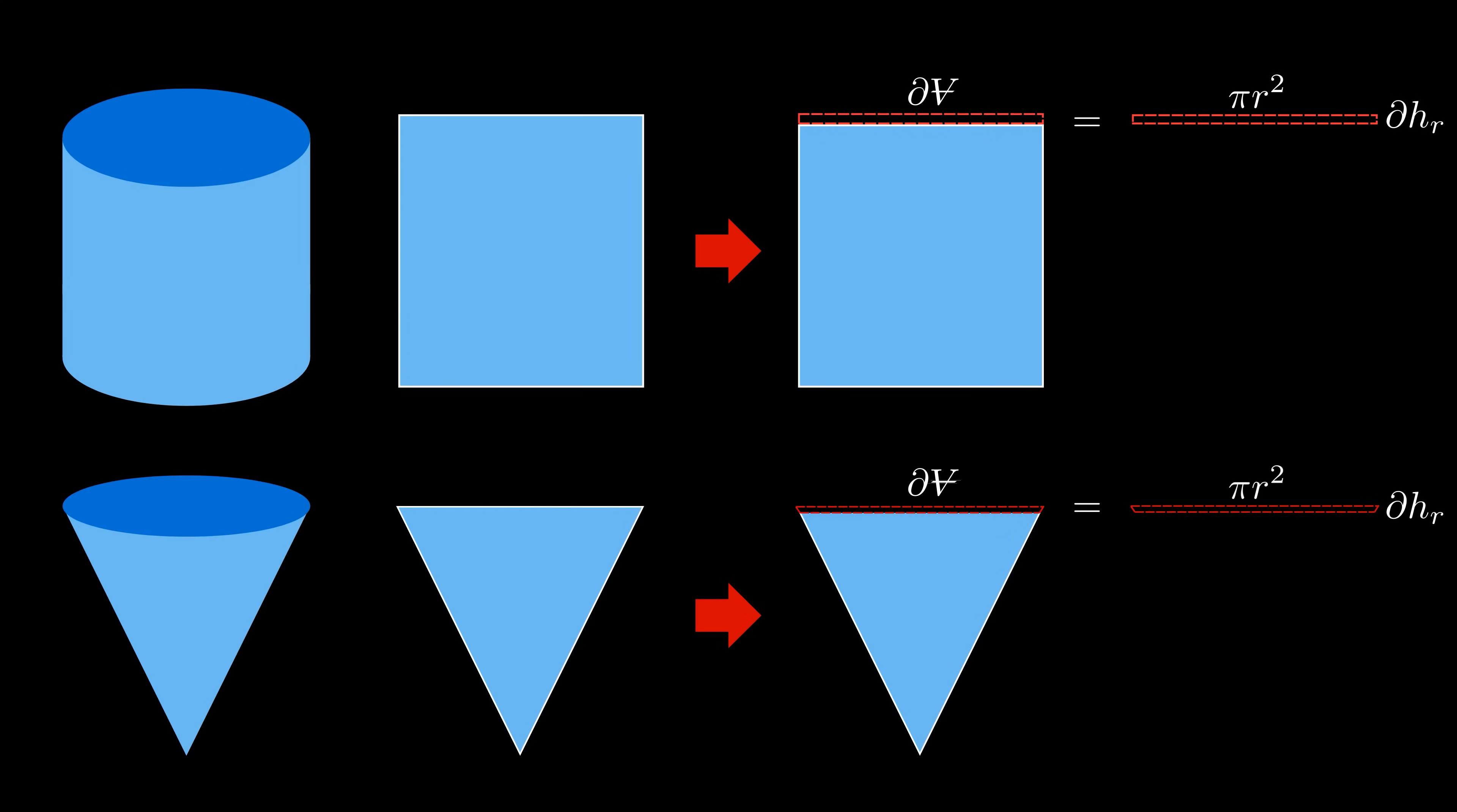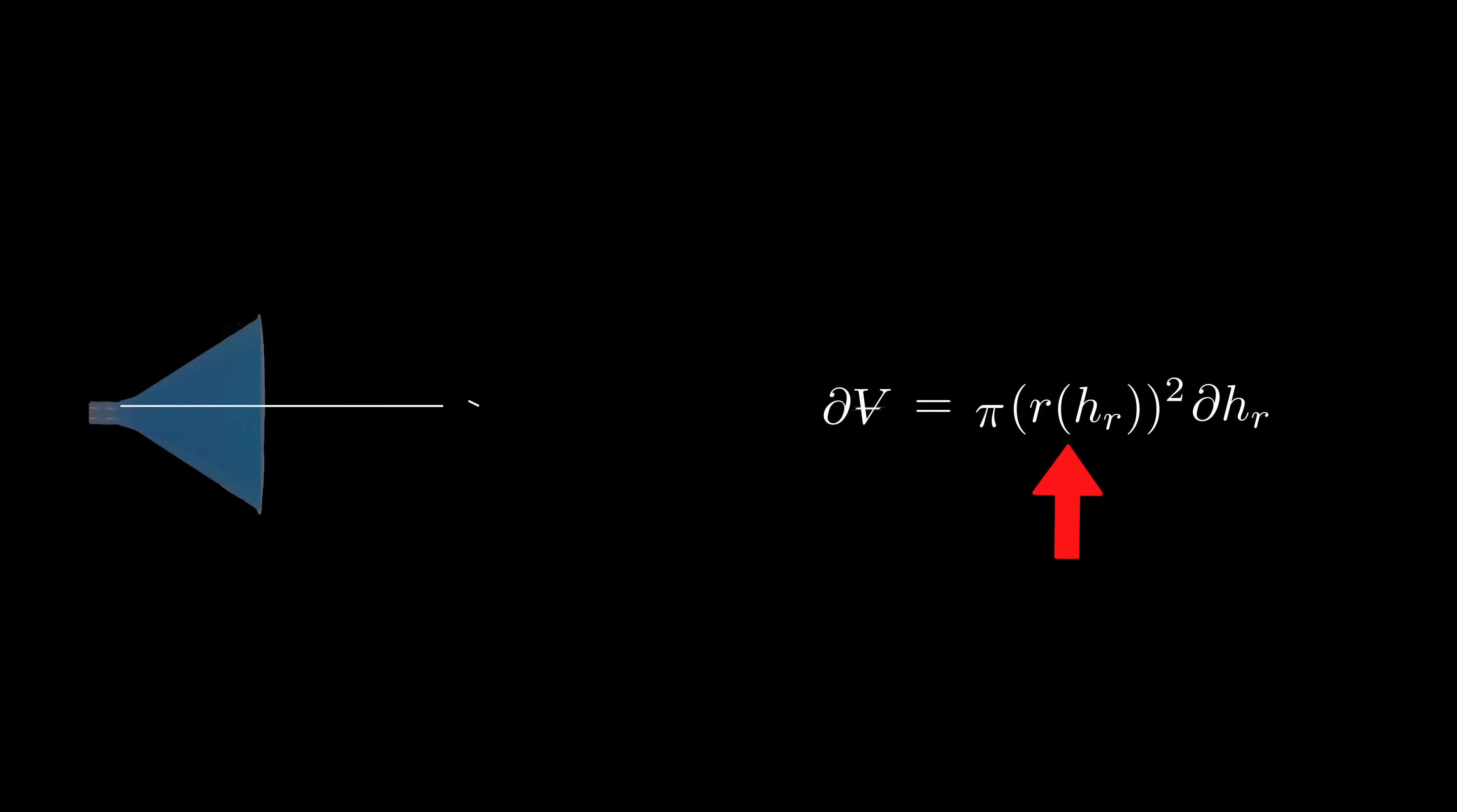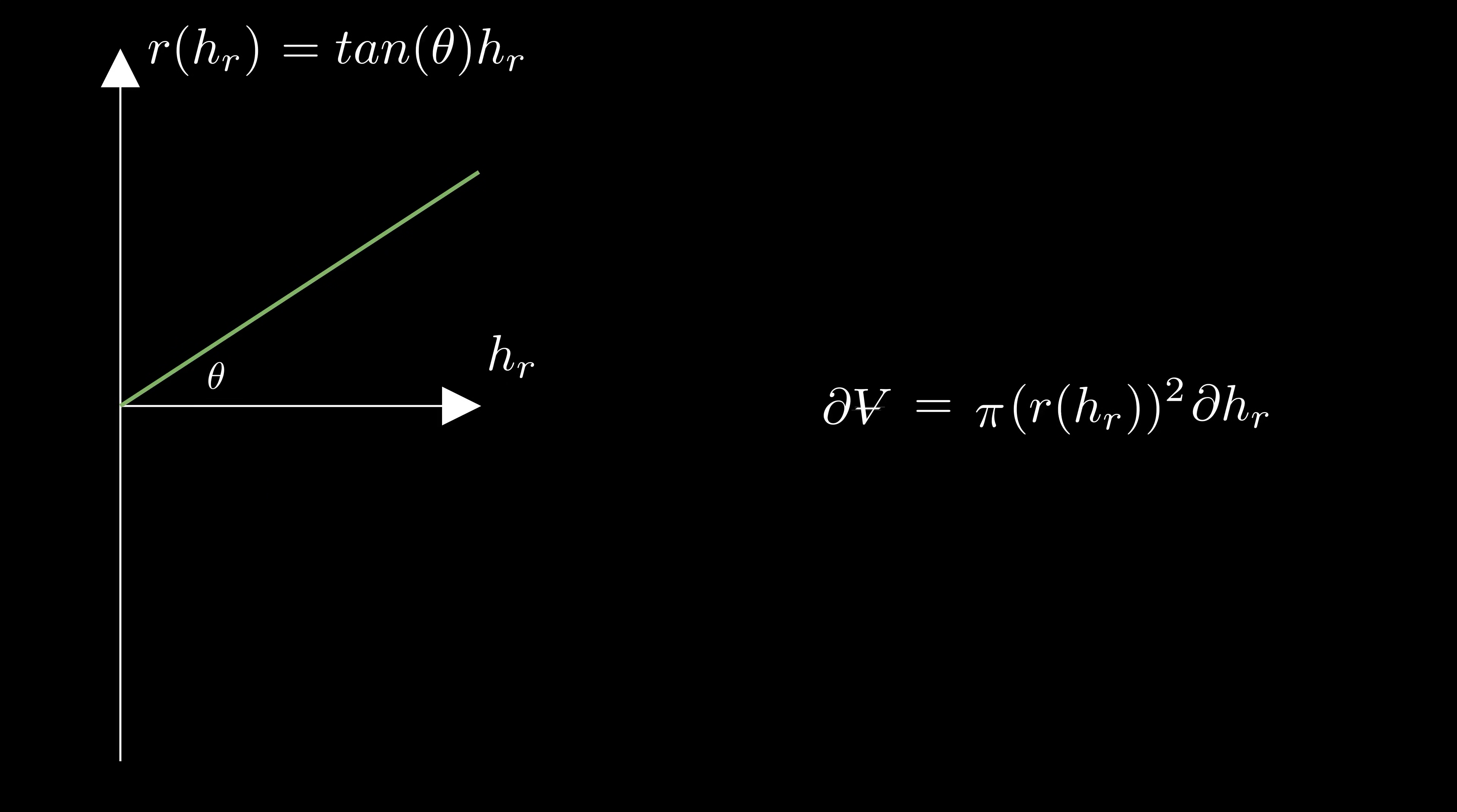Unfortunately for a funnel the radius is not a constant, but rather a function of height. Luckily we do know exactly how the radius changes with the reservoir height from measuring the angle of the funnel, so the slope of this line is just rise over run, or tangent of that measured angle.